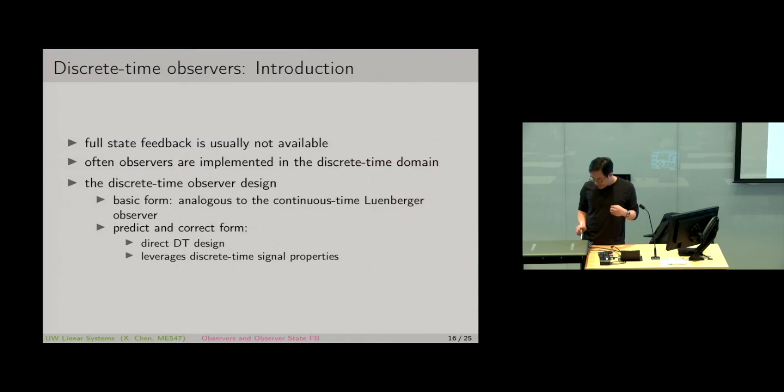Then there are some interesting differences that will appear. It turns out the discrete time observer will have two routes, two design principles. The first is the same as the continuous time Luenberger observer. This basic form, the structure and property, is almost the same as the continuous time Luenberger observer.